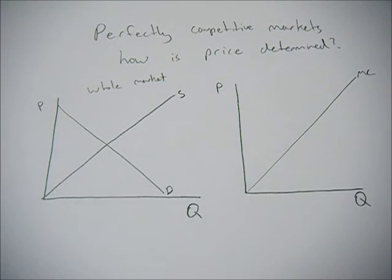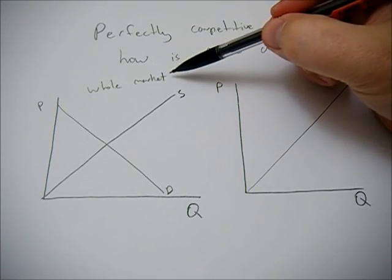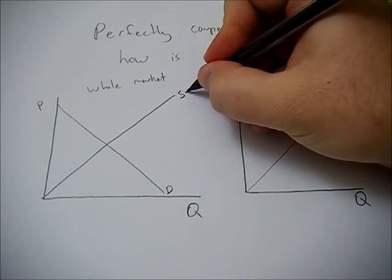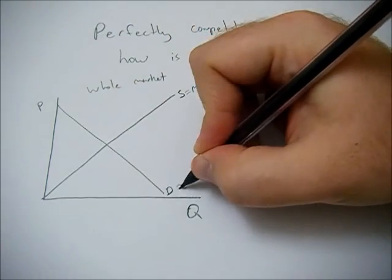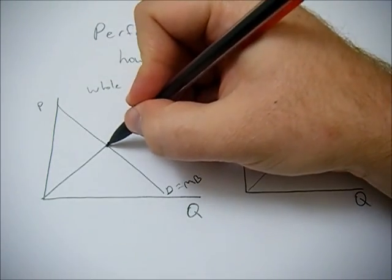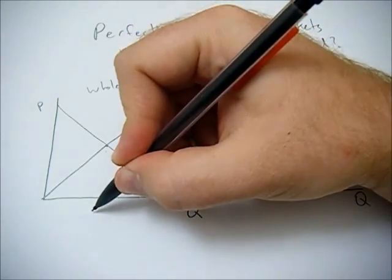How does price get determined in a perfectly competitive market? When we look at the whole market, it's pretty easy. We have supply or marginal cost, demand or marginal benefit, and where they cross, that gives us equilibrium quantity and equilibrium price.